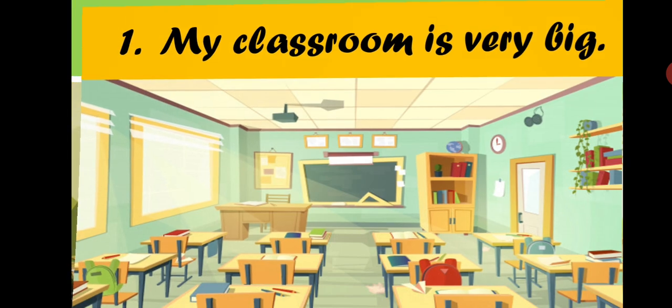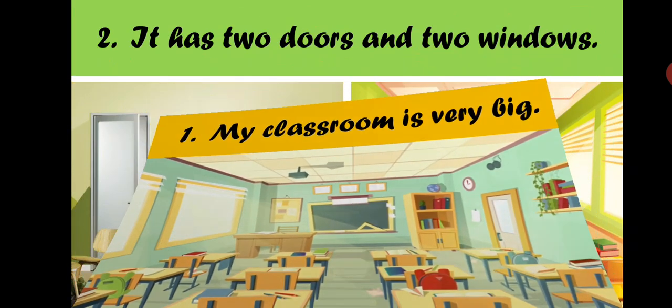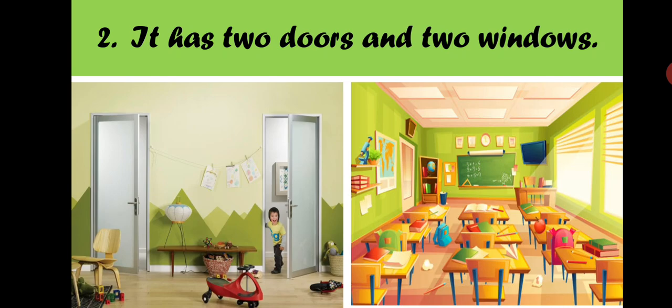The next line is: it has two doors and two windows. Children, if you have ever noticed, in many classrooms there are always two doors and two windows — one in the beginning and the other one at the back.